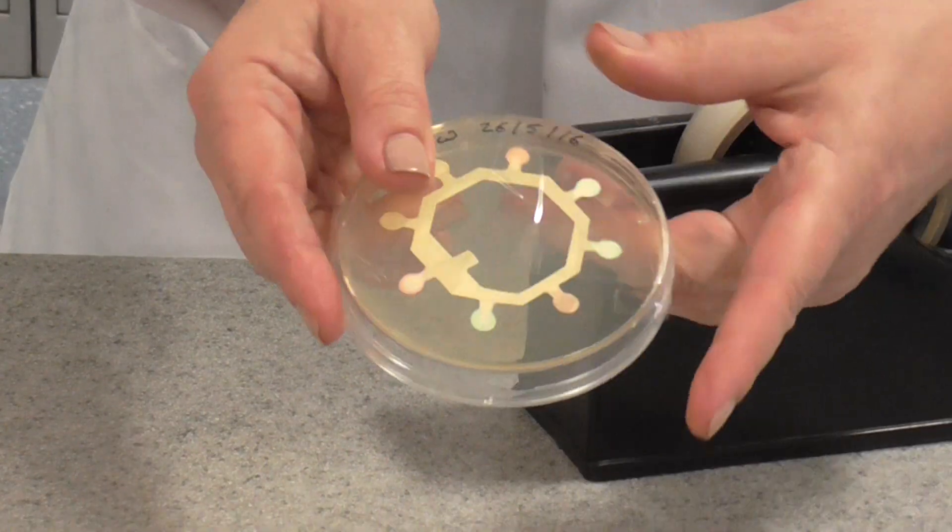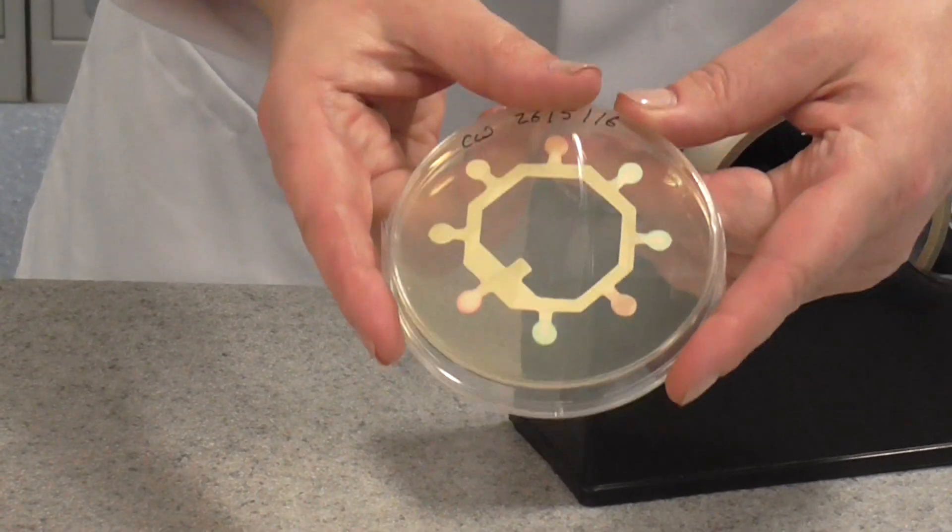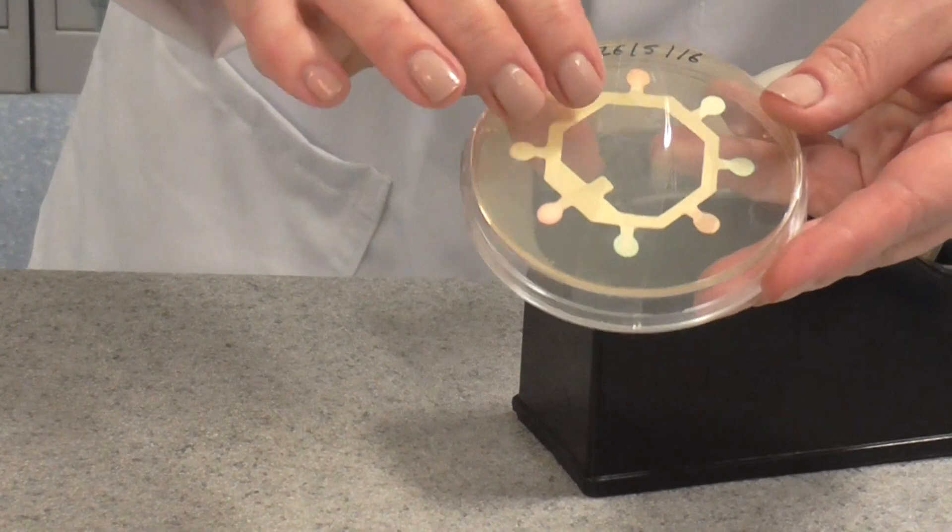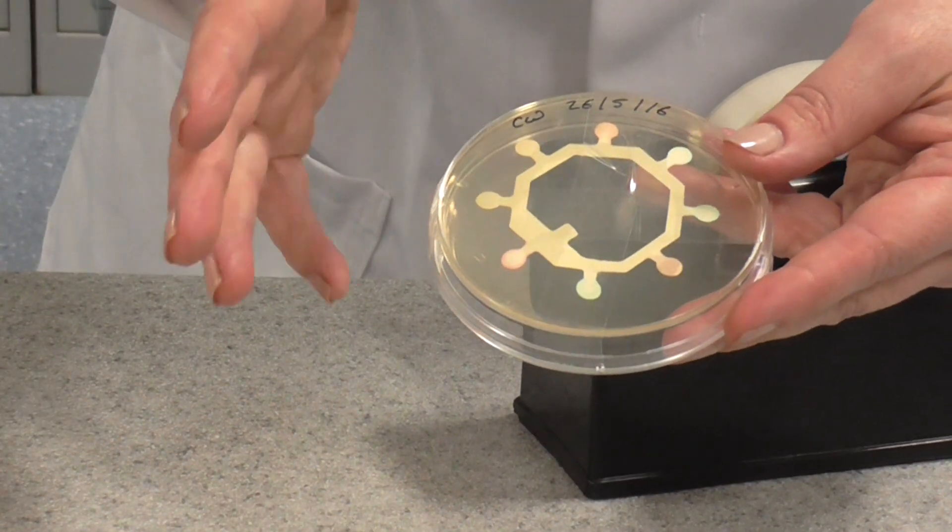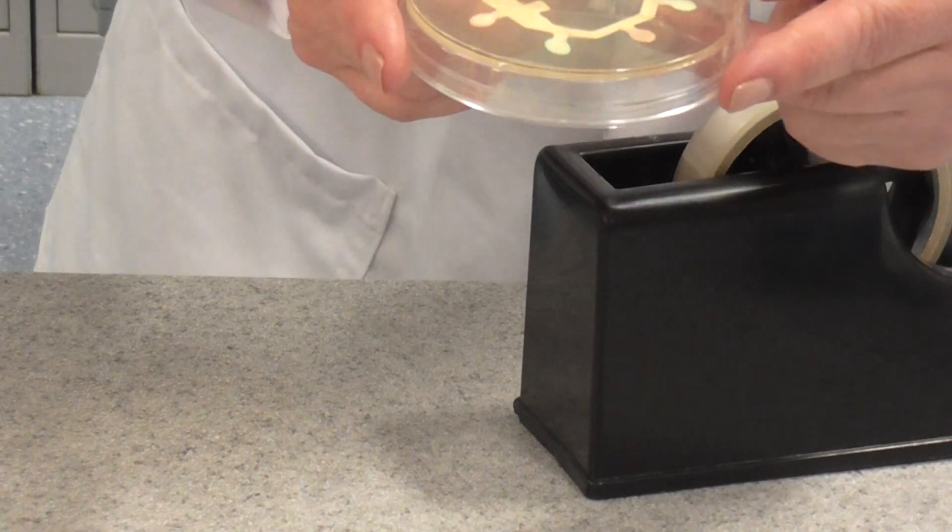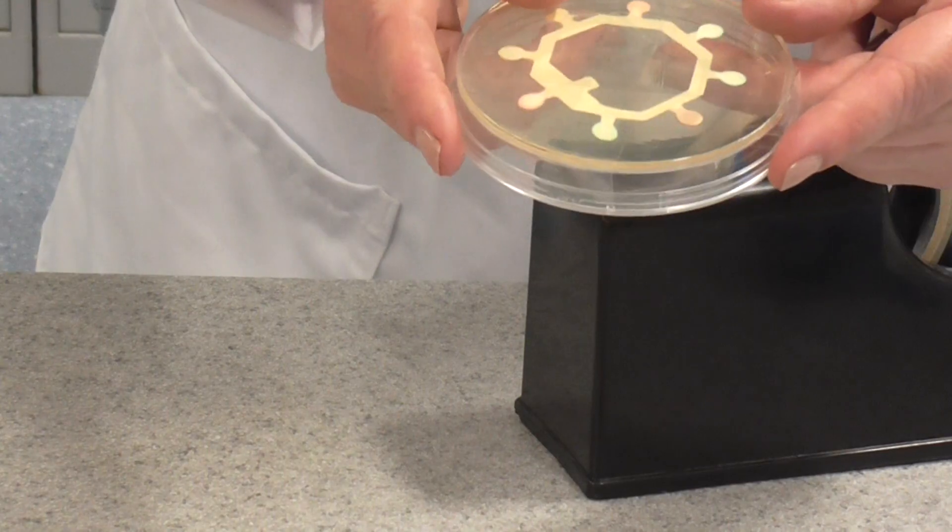This should be placed in an incubator at 20 degrees C in the school lab because we don't use higher temperatures because we do not want to encourage the growth of pathogens. So temperatures around 37 degrees are not allowed. So 20 degrees C for about 48 hours and you should be able to see the results.